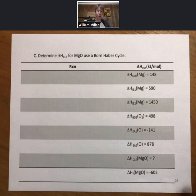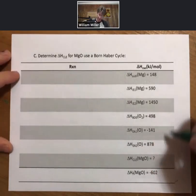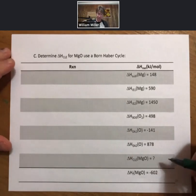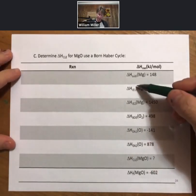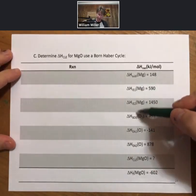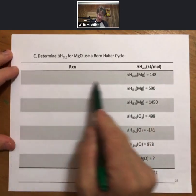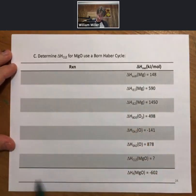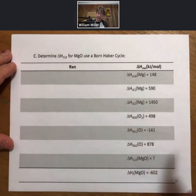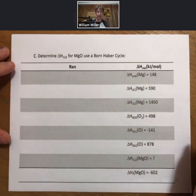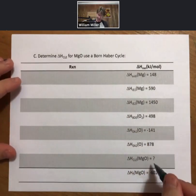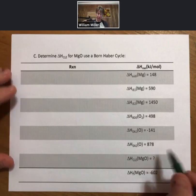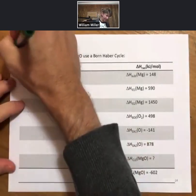A crystal lattice energy Bornhaber cycle problem in your future on say an exam will almost for certain look like this, where each of these tells you what kind of reaction it is. You have to write out the reactions, add them up, and solve for the crystal lattice energy. As the one thing, just like we did before, this is a companion problem.